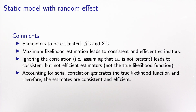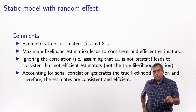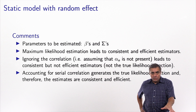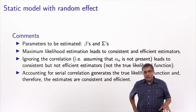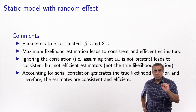Some comments about the static model with random effect: the parameters to be estimated include the betas from the utility function and the variance-covariance matrix of the distribution of the agent effect. Maximum likelihood estimation leads to consistent and efficient estimators. Interestingly, if you ignore the correlation — as in the static model without alpha_n — estimates are consistent but not efficient, because it is not a true likelihood function. By accounting for serial correlation through the random effect, we obtain a true likelihood function, yielding consistent and efficient estimates.